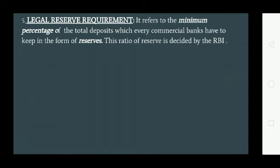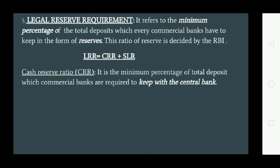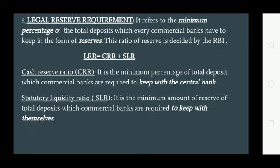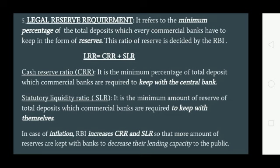The fifth instrument is legal reserve requirement (LRR) — it refers to the minimum percentage of total deposits which every commercial bank has to keep in the form of reserves, as decided by RBI. LRR = CRR + SLR. Cash Reserve Ratio (CRR) is the minimum percentage of total deposits which commercial banks are required to keep with the central bank. Statutory Liquidity Ratio (SLR) is the minimum amount of reserves of total deposits which commercial banks are required to keep with themselves. In case of inflation, RBI increases CRR and SLR so that more reserves are kept with banks to decrease their lending capacity to the public.